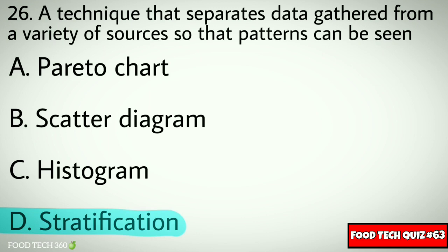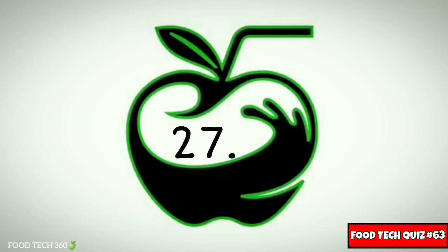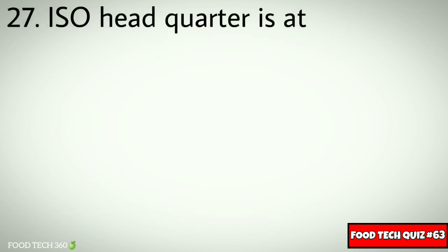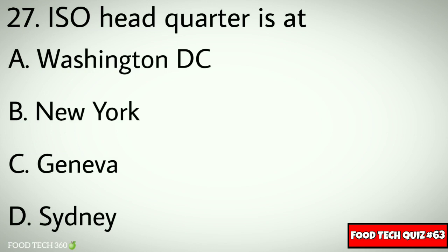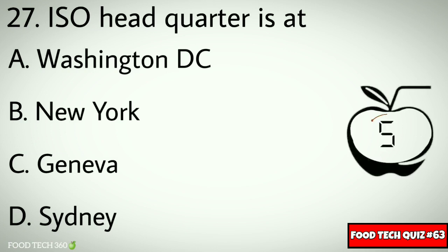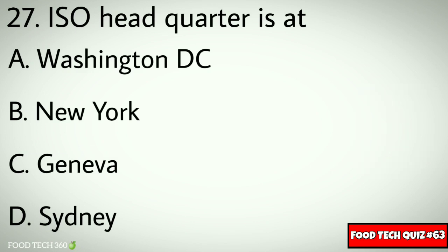Question No. 27. ISO headquarters is at: Options: A. Washington D.C., B. New York, C. Geneva, D. Sydney. Correct answer: C. Geneva.